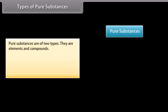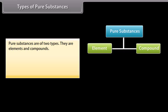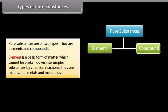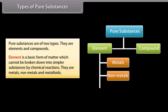Types of pure substances: Pure substances are of two types - elements and compounds. An element is a basic form of matter which cannot be broken down into simpler substances by chemical reactions. They are metals, non-metals, and metalloids.